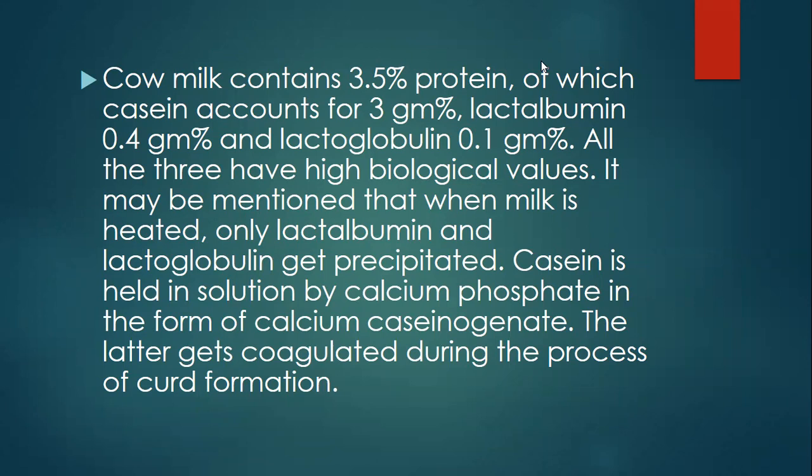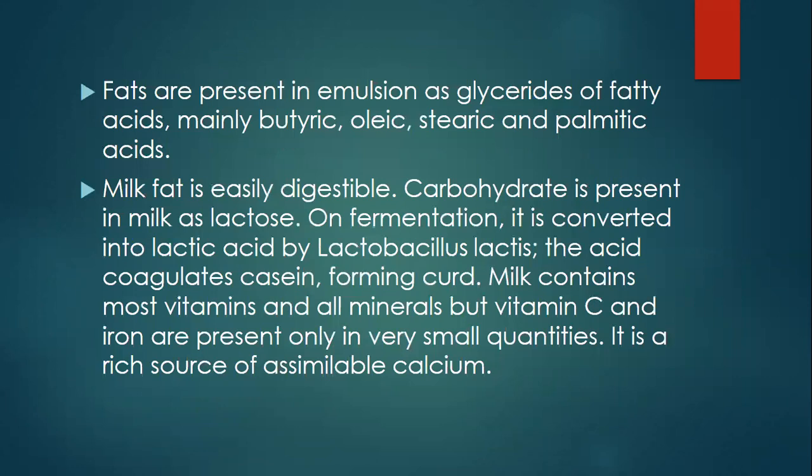It may be mentioned that when milk is heated, only lactalbumin and lactoglobulin get precipitated. Casein is held in solution by calcium phosphate in the form of calcium caseinogenate. The caseinate proteins are coagulated during the process of curd formation.